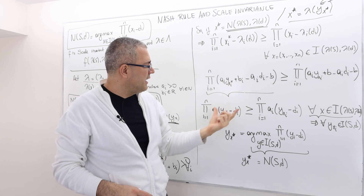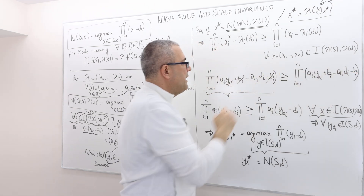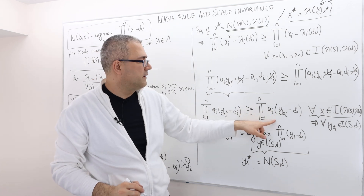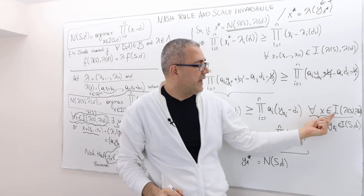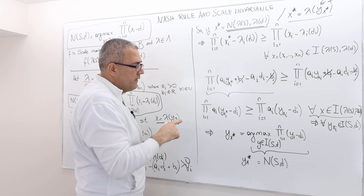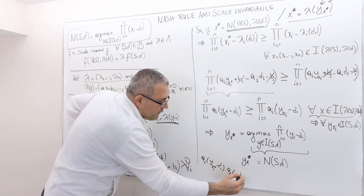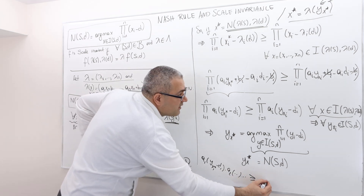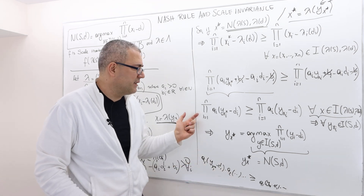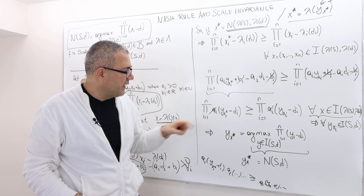Now I open them up. Remember, xi star equals ai·yxi star plus bi, and lambda_i·di means ai·di plus bi, so those are the transformed payoffs. The bi's cancel out on both sides. Then I can factor out ai into parentheses: ai times (yxi star minus di) on the left and ai times (yxi minus di) on the right. Since everything is a product, all the ai's cancel out for every i from 1 to n, and I can get rid of them.